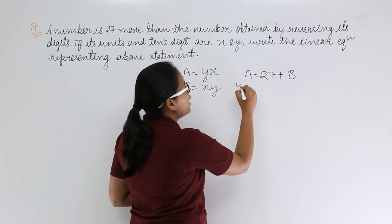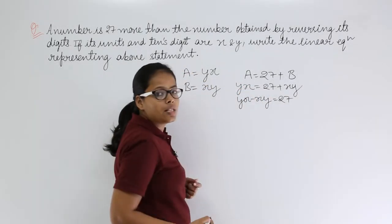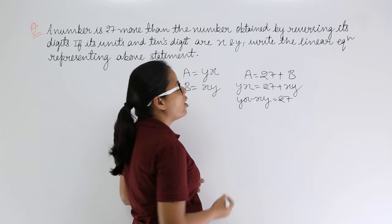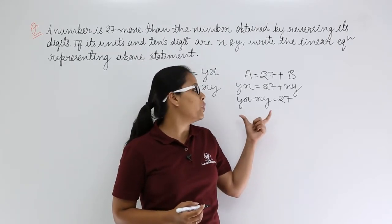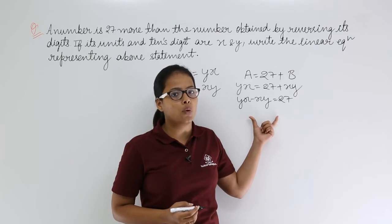So A is equal to 27 plus B. Now let's put the value for A and B here. This is equal to 27.